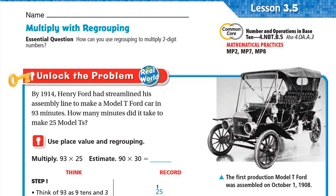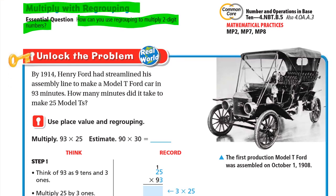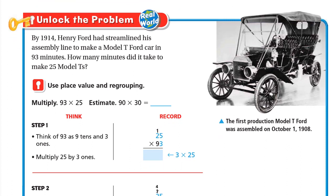Hello, this is Mr. Ahmed and today we'll do lesson 3.5: Multiply with Regrouping. Our essential question is: how can you use regrouping to multiply two-digit numbers? Let's unlock the problem. By 1914, Henry Ford had streamlined his assembly line to make a Model T Ford car in 93 minutes. How many minutes did it take to make 25 Model T's?